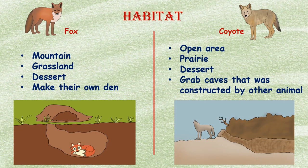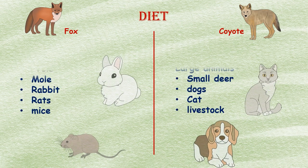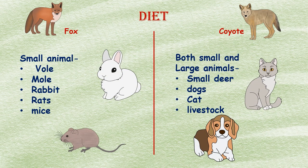Foxes usually live in forested areas, though they are also found in mountains, grasslands, and deserts. They make their homes by digging burrows in the ground, called dens, which provide a cool area to sleep, a place to store food, and a safe place to have their pups. Coyotes typically prefer open areas such as the prairie and desert, and make their lodges in rock crevices or tree stumps, turning caves constructed by other animals like raccoons into their homes.